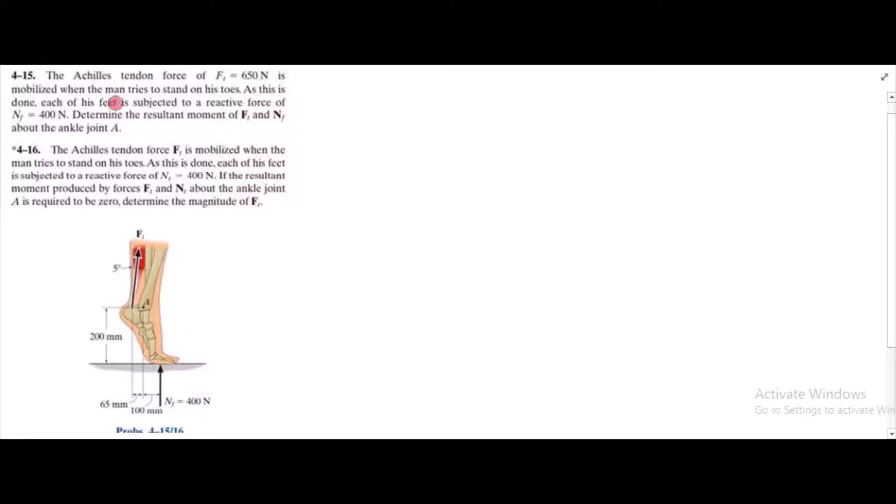According to problem 4-15, the Achilles tendon force is given as 615 Newtons and we have another force which is the normal reaction force from the floor as 400 Newtons. We have to determine the resultant moment of these two forces about point A.